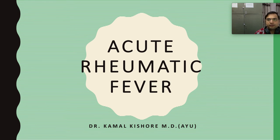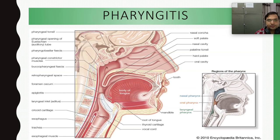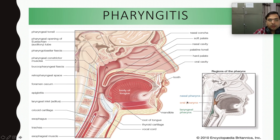Before knowing acute rheumatic fever, let us know what is pharyngitis, because acute rheumatic fever is related with pharyngitis. We know what is the pharynx and the different types: nasal pharynx, oropharynx, and laryngeal pharynx. The pharynx is considered as the upper respiratory tract (URT) — up to the larynx it is upper respiratory tract.